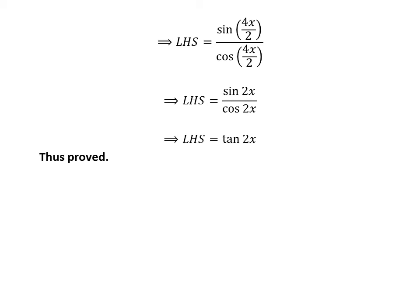Since sine of 2x upon cosine of 2x is equal to tangent of 2x, the left-hand side equals tangent of 2x, which equals the right-hand side of the given equation. Thus we have proved the given equation. Thank you for being with me — I hope you liked this video.